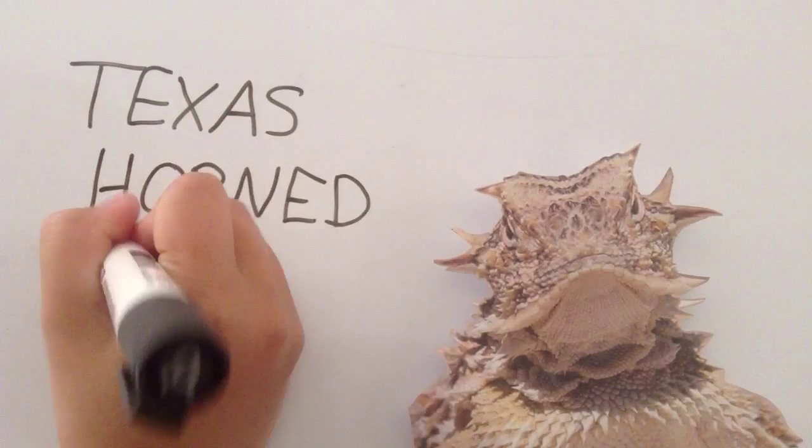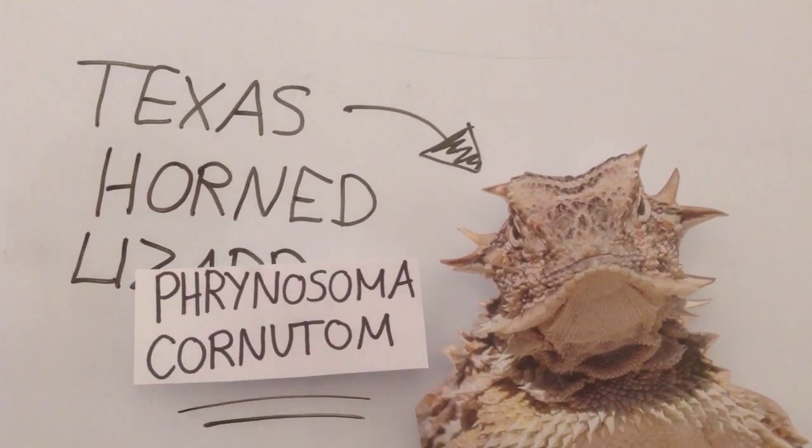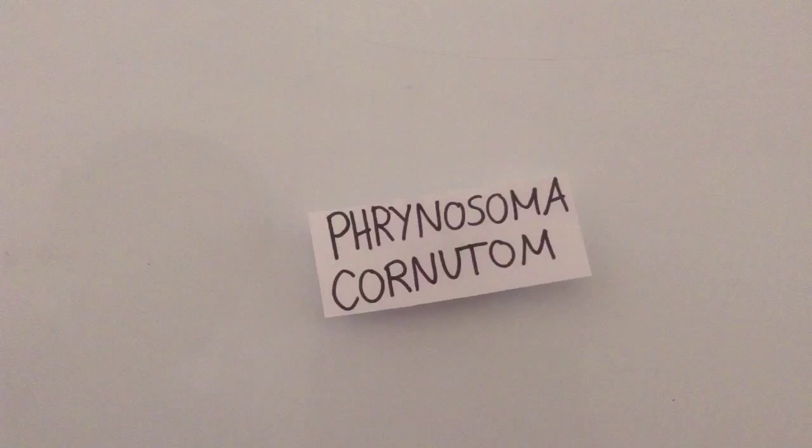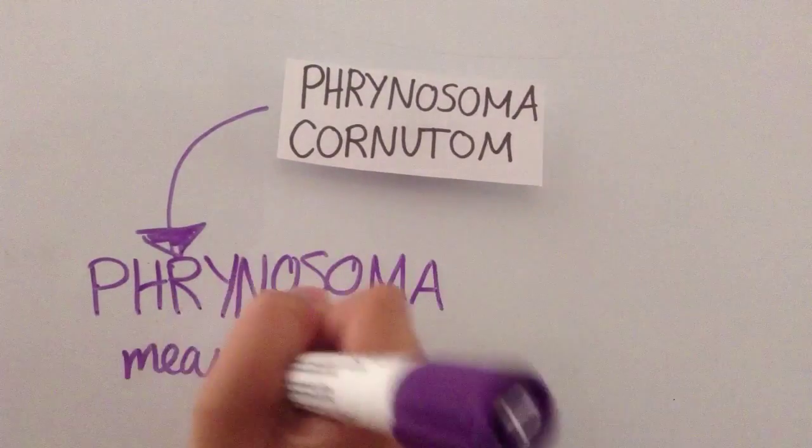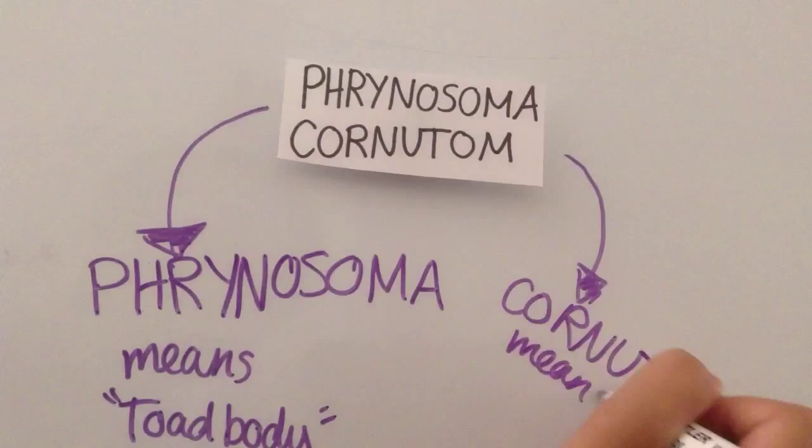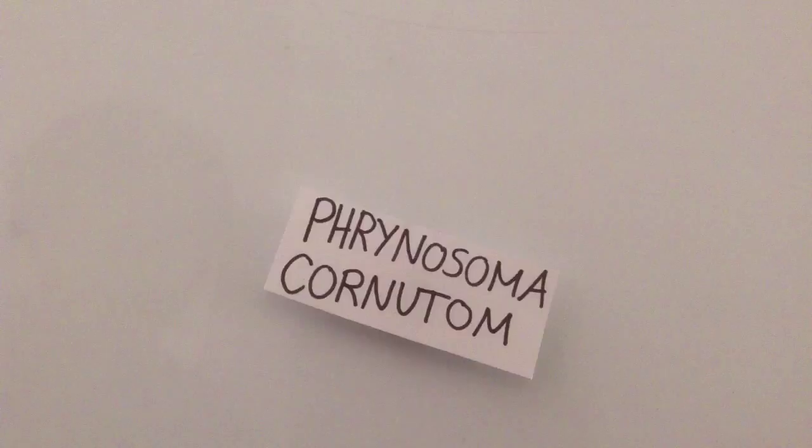This is the Texas Horned Lizard, also known as the Phrynosoma Cornutum. Phrynosoma means toad body, Cornutum means horned.